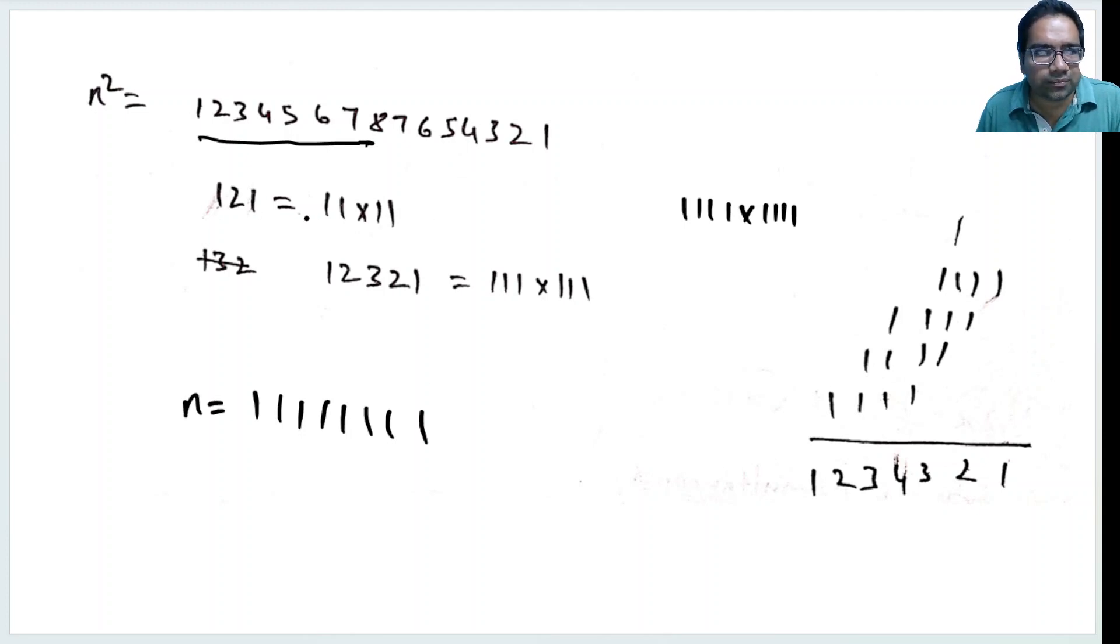You can just see it. 121, this is going till 2, that means 2 ones. 12321 is going till 3, that means 3 ones. Likewise, it is going till 8, that means 8 ones. That is a simple trick, simple problem.